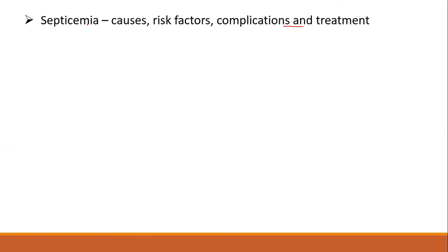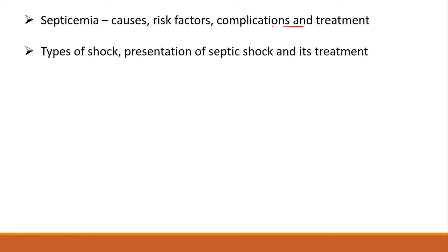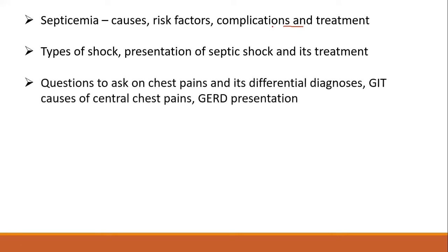They were asked to talk about septicemia — the causes, risk factors, complications, and treatment. If you have answers to any of the questions, please write in the comment section so others can learn. They were also asked about shock: the types, how they present especially in septic shock, and how to manage it. Then questions to ask on chest pain, its differential diagnosis, and GIT causes of central chest pain.